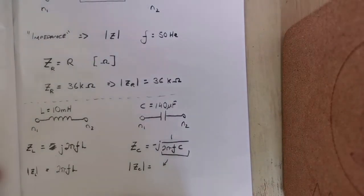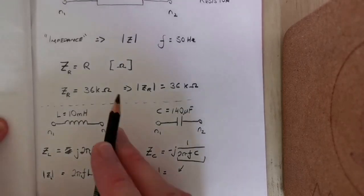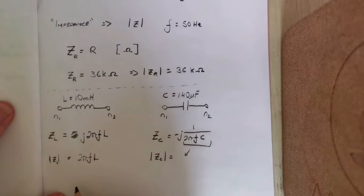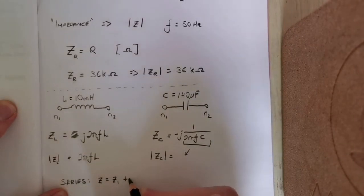That's the basic idea of impedance for those three components. If we're looking at combinations of them in series, the total overall impedance is just impedance of the first component plus the impedance of the second component and so on.